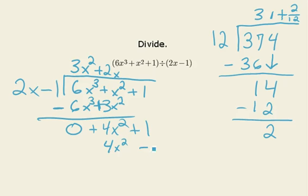2x times minus 1 is equal to negative 2x. Let's subtract by changing signs on things and adding. Those things add to 0. 2x plus 1 is 2x plus 1. And I can say, how many times does 2x go into 2x? Oh, those are equal. It goes in one time.